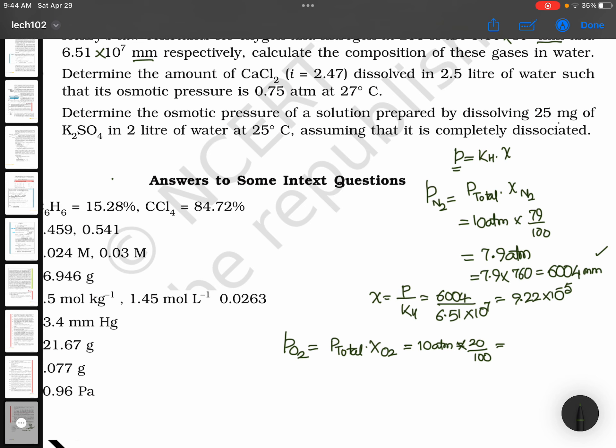This equals 2 atmospheres pressure times 760 millimeters, which equals 1520 millimeters of pressure. This is the partial pressure of oxygen.